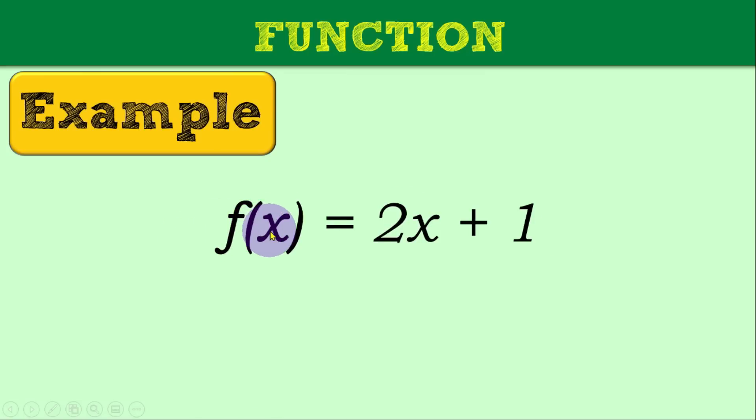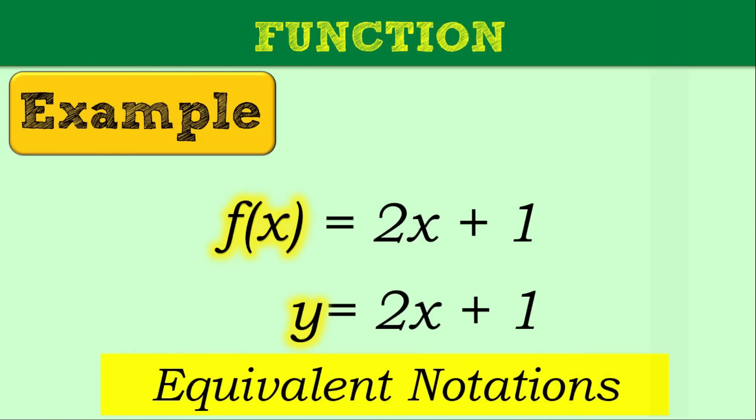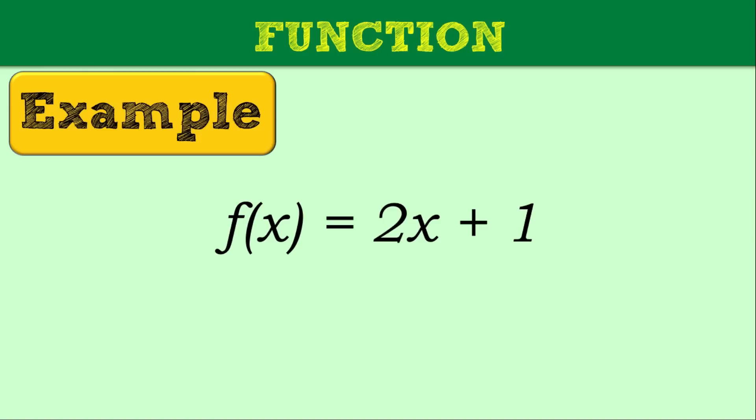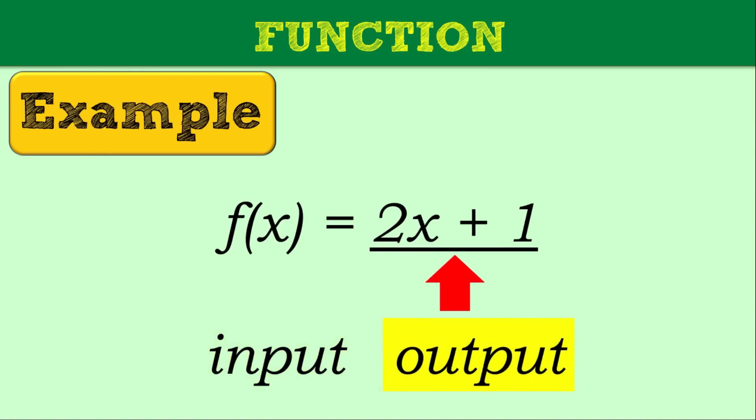We have here this function: f of x is equal to 2x plus 1. You can rewrite that as y is equal to 2x plus 1. f of x notation is another way of representing the y value in the function, meaning these two are considered equivalent notations. Here, x stands for the input similar to the input in our function machine, and this would be our output, 2x plus 1.